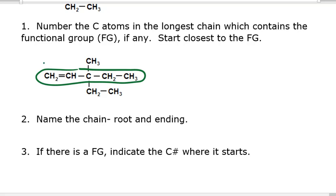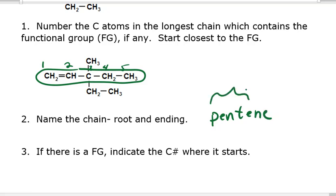Then we number the carbon atoms — one, two, three, four, and five for the carbons in that longest chain. We start numbering closest to the functional group. That circled part would have a root and an ending for that chain. So that's five carbons, that's 'pent,' and the ending would be 'ene' because it's an alkene. Five carbons gives you that root, and the ending 'ene' is because it's an alkene.